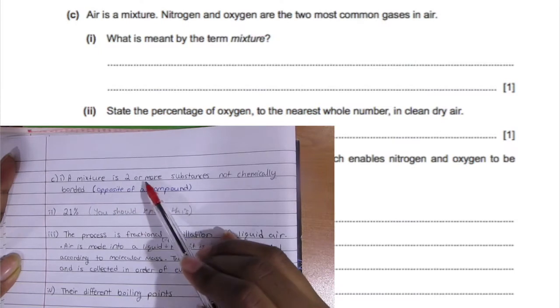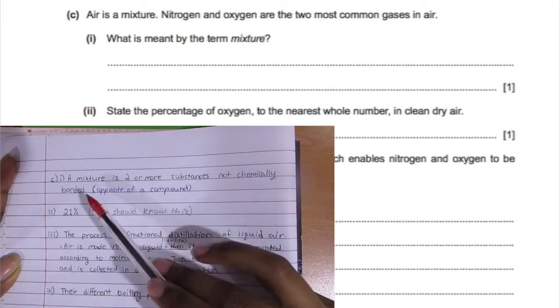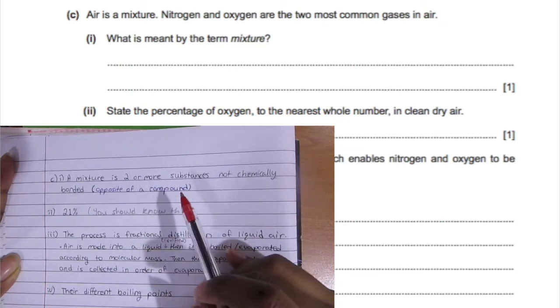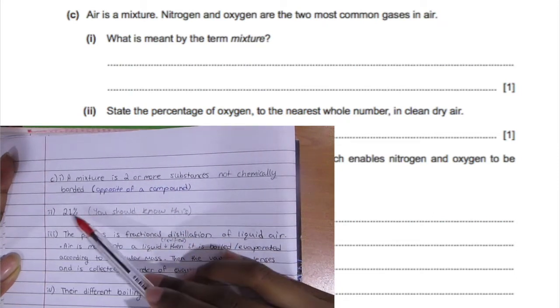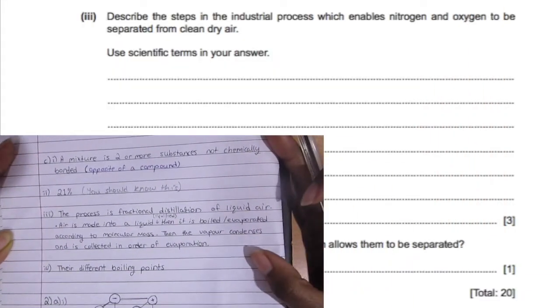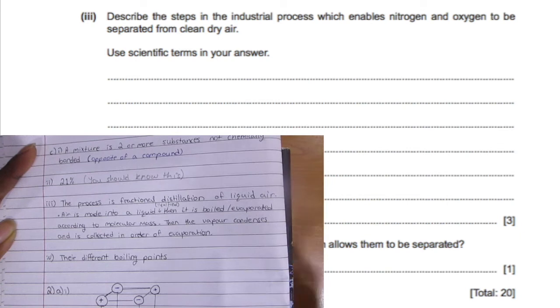For C, they're asking us to define the term mixture. A mixture is two or more substances that are not chemically bonded, which is exactly the opposite of a compound. For double i, we need to state the percentage of oxygen, and that is 21 percent, which we saw earlier in the pie graph.